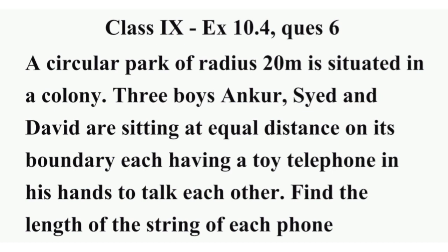Ab aapko yeh find out karna hai ki yeh teen logo ke telephone ka jo tar hai — jo Ankur se Sayyad ke paas jata hai, uska length kitna hai. Ya phir Sayyad se David, ya David se vaapas Ankur. Kyunki dono equal distance mein baithe hain, to teenon ka jo tar hai woh equal length ka hoga. Toh woh jo tar hai telephone ka, uska length kitna hai, aapko find out karna hai. Chaliye whiteboard mein dekhte hain.